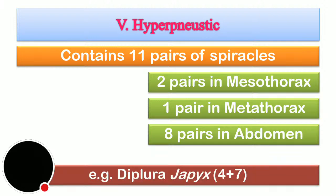An example is diplurans — Japyx — having four spiracular pairs in thoracic segments and seven in abdominal segments, totaling 11. So this is the complete classification of the tracheal system in insects. When you watch both parts of the video, you will get the whole idea. Thank you.